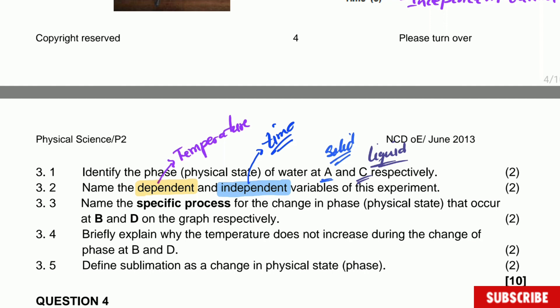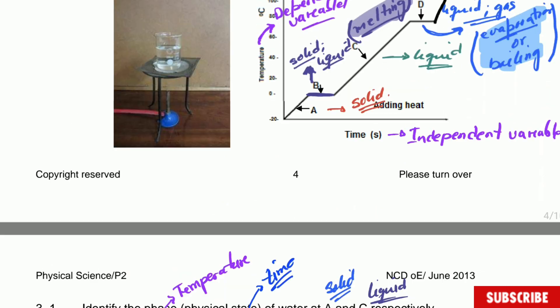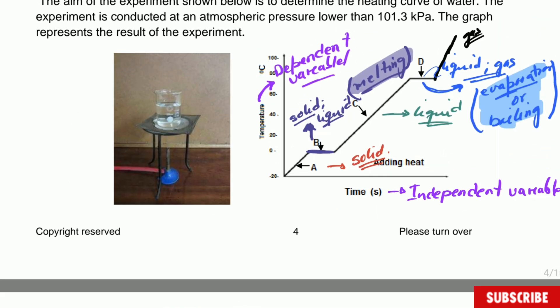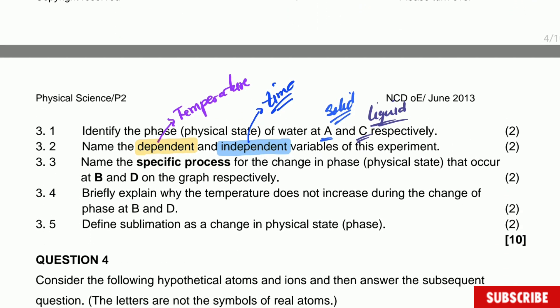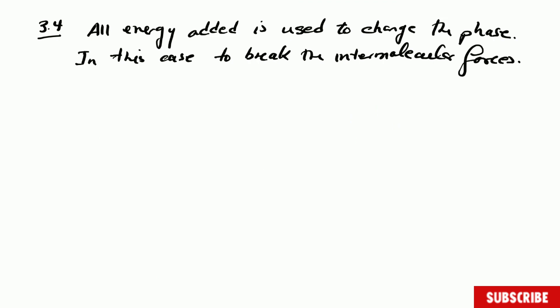Briefly explain why the temperature does not increase during the change of phases at B and D. Why is the temperature keeping constant? As you can see, temperature stayed constant in those two points. So what we are going to say is that all the heat needed there is used to change the phase from ice into water and from water to gas. So all the energy was needed to break the intermolecular forces. All the energy added is being used to change the phase. In this case, what is happening is that the intermolecular forces are breaking. So all the energy there is used in breaking the intermolecular forces.